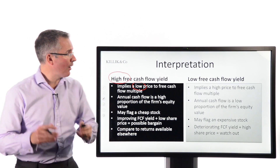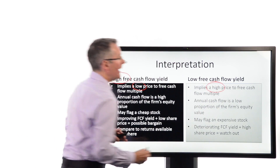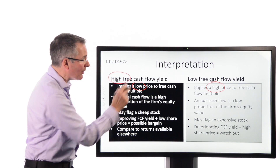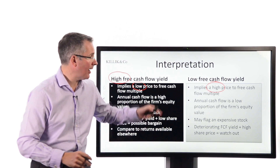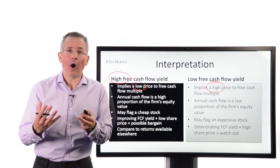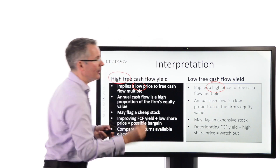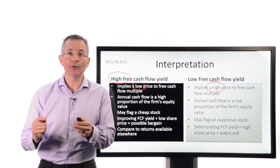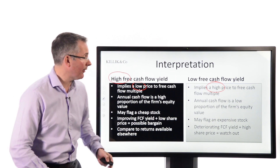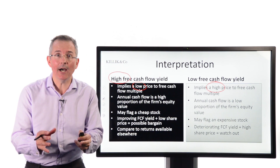The converse is also true. Low free cash flow yields imply mathematically a high price-to-free-cash-flow multiple — just another way of saying the same thing. Annual cash flow is a relatively low proportion of the firm's equity value, so it could flag an expensive stock. Why am I paying so much for so little cash flow? And deteriorating free cash flow yield combined with a high share price could be a watch-out: this is not looking like a clever place to have your money.